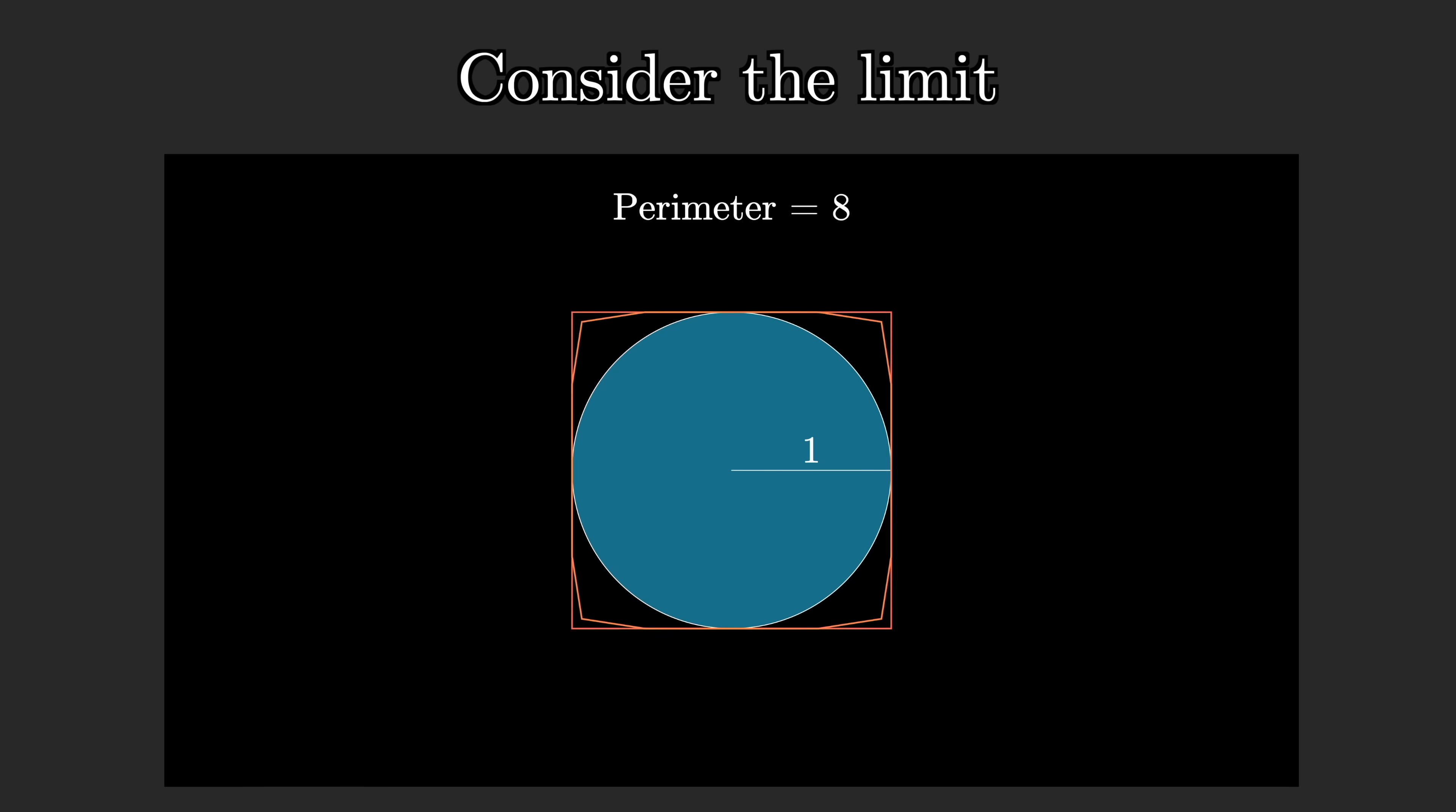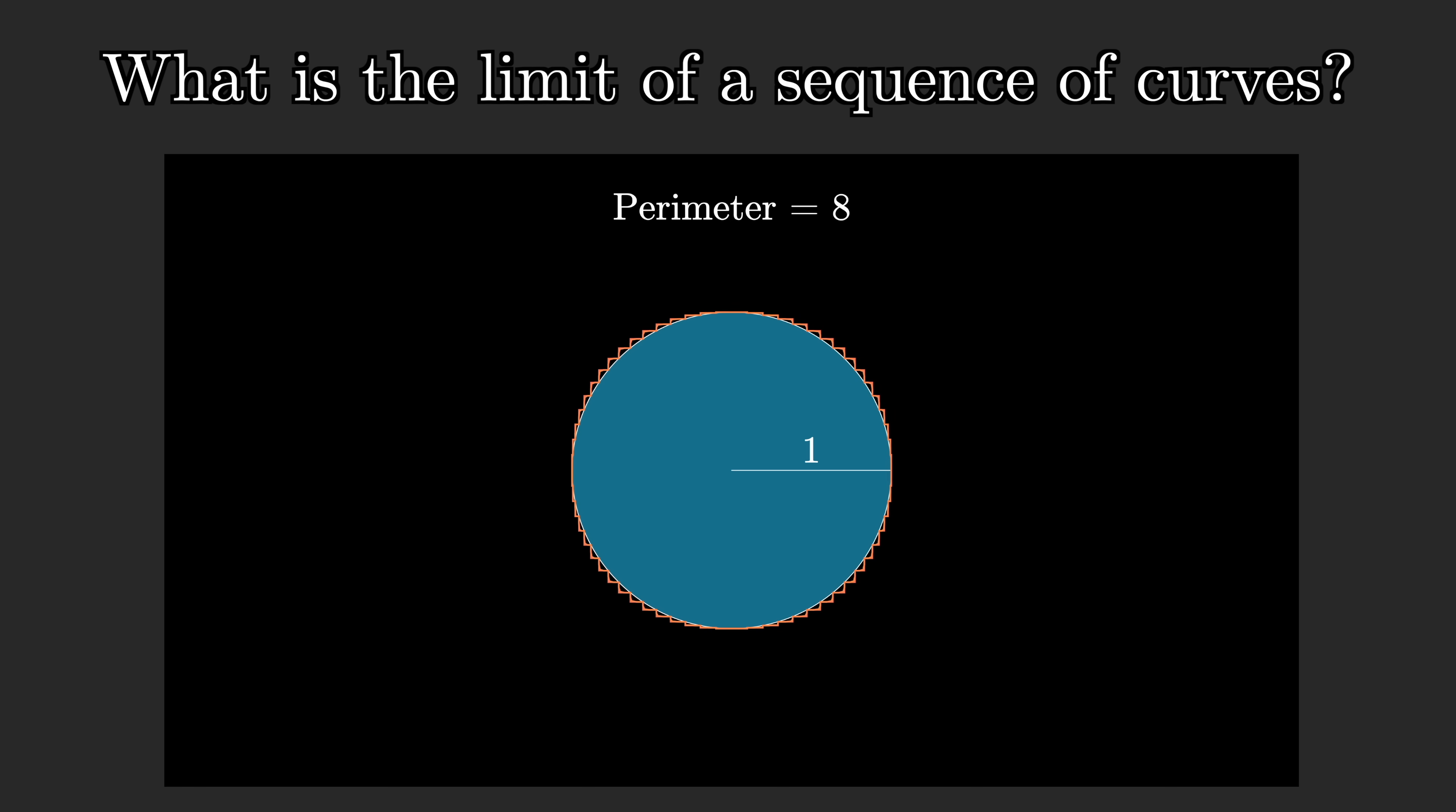While that is true, and ultimately the reason things are wrong, if you want to appreciate the lesson this example is teaching us, the claim of the example is not that any one of these approximations equals the curve, it's that the limit of all of the approximations equals our circle. And to appreciate the lesson that this example teaches us, it's worth taking a moment to be a little more mathematically precise about what I mean by the limit of a sequence of curves.